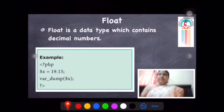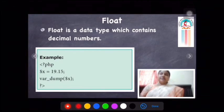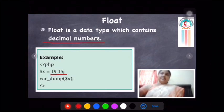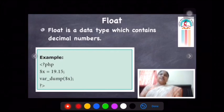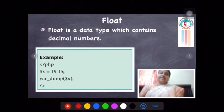Now we are going to see the float data type. Float is the data type which contains decimal numbers. Integer is the non-decimal number, while float is the decimal number. For example, 19.15 is a decimal number, so it is a float. Here, dollar X equals 19.15. var_dump(X) returns the float type and value. Then we close the PHP tag.